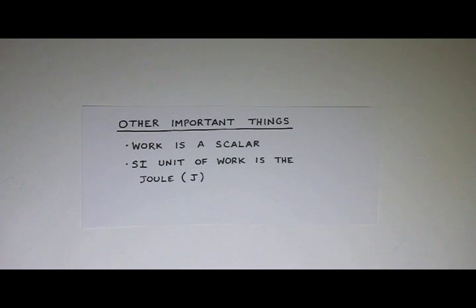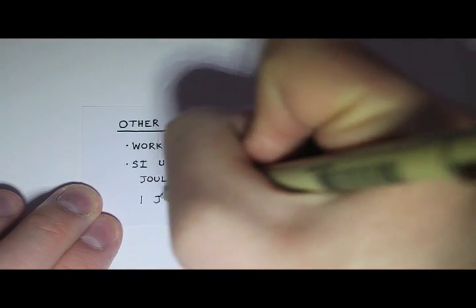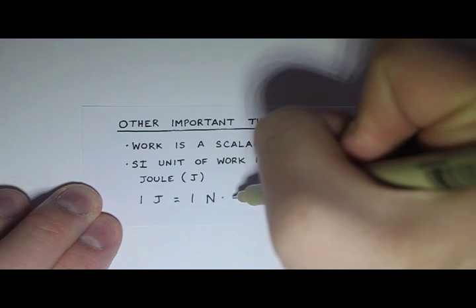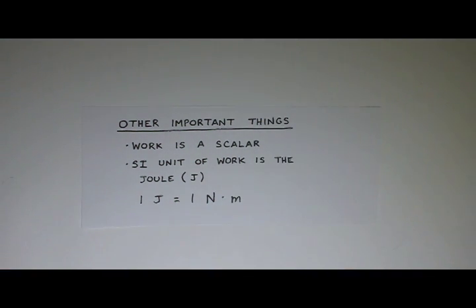And also, the SI unit of work is the joule, named after James Prescott Joule. And since we know that work is F times D times the cosine of an angle, well, angle is unitless, and then we have F times D. So we can say that one joule is equal to one—let's see, force is in newtons and D is in meters—so one joule is equal to one newton times a meter.